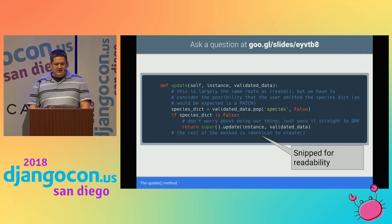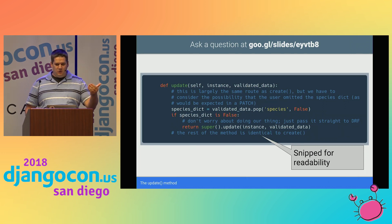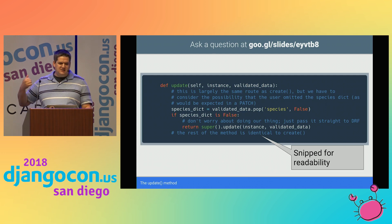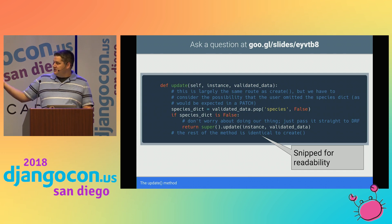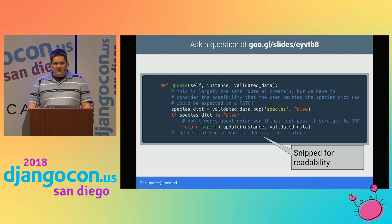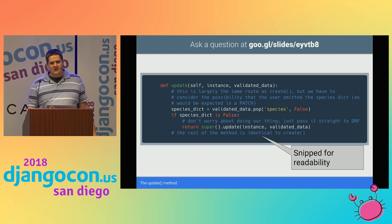The update method is pretty much the same as create, but we have to consider one case where the user does a PATCH — where you don't have to include the entire body of the object when submitting the request. So just pop it out first and use a value that's completely invalid if it's not present, like false. And if that is that bogus value, just return it upstream and let upstream do its thing — it's easier that way than writing it yourself.